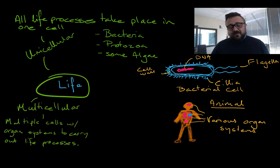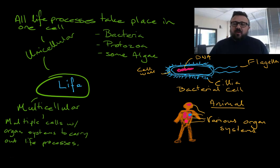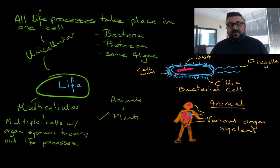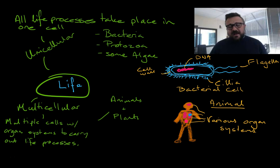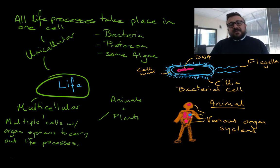Multicellular life tends to have multiple cells — you have more than one cell — and you've got organ systems which carry out all of the life processes. Animals and plants tend to be our multicellular organisms, and algae again comes out of the plant category. Protozoa is very close to an animal; some classifications place them with animals, but we'll call them a separate thing altogether.